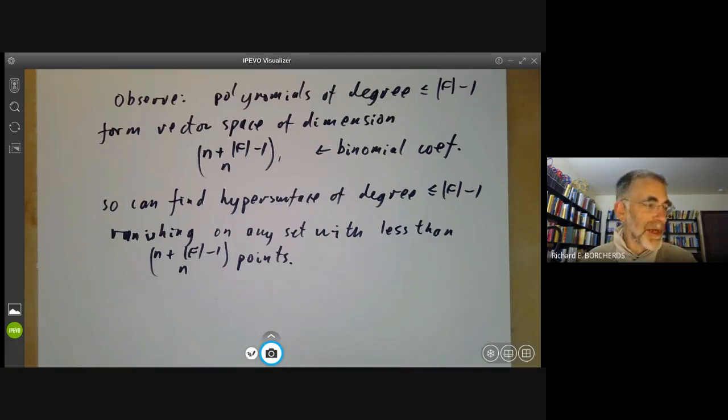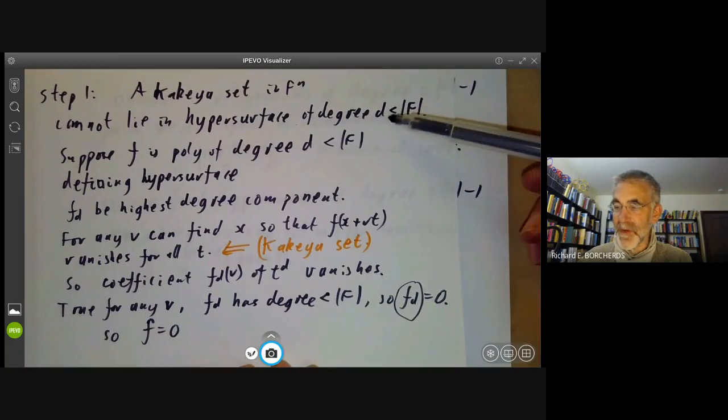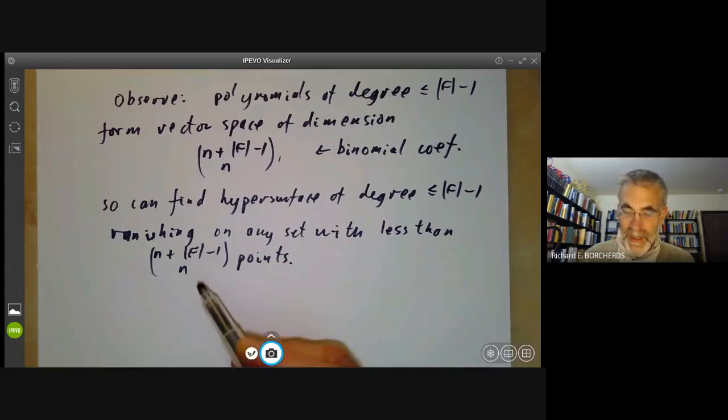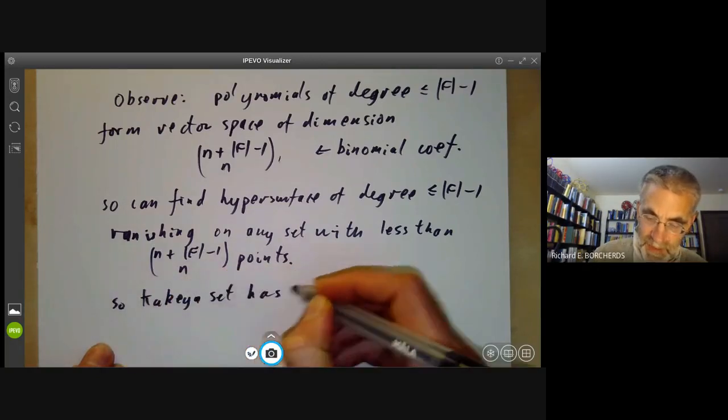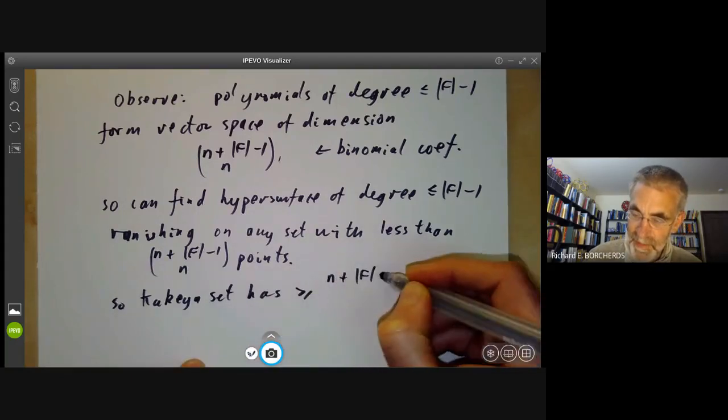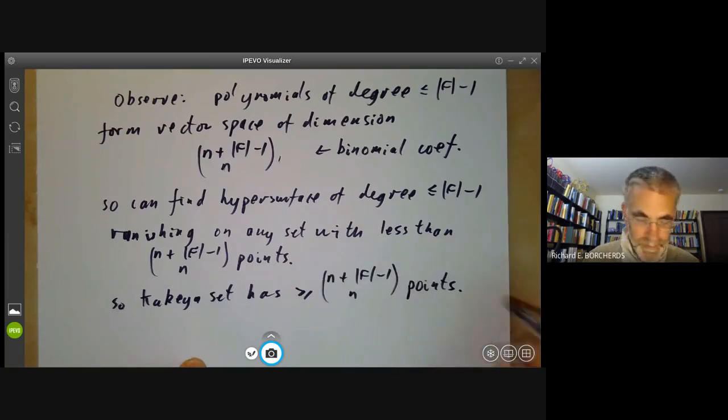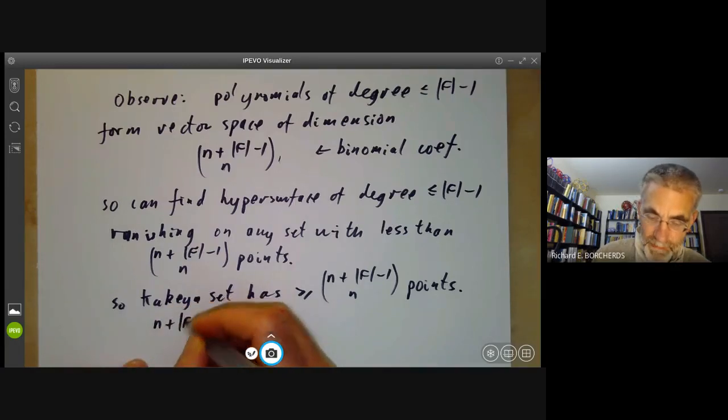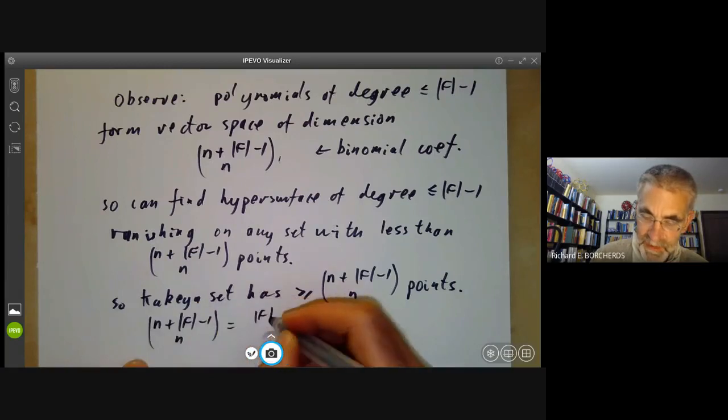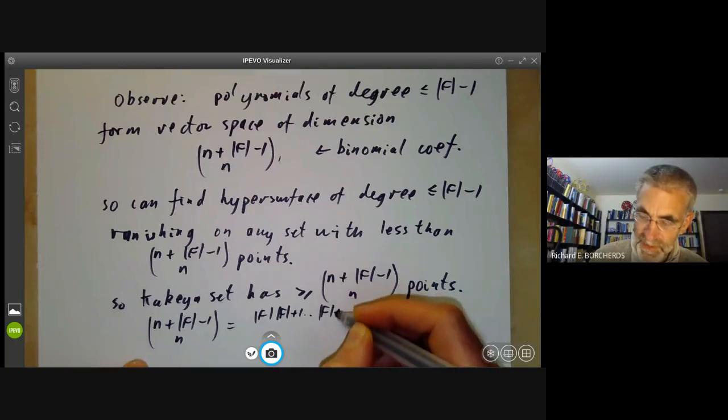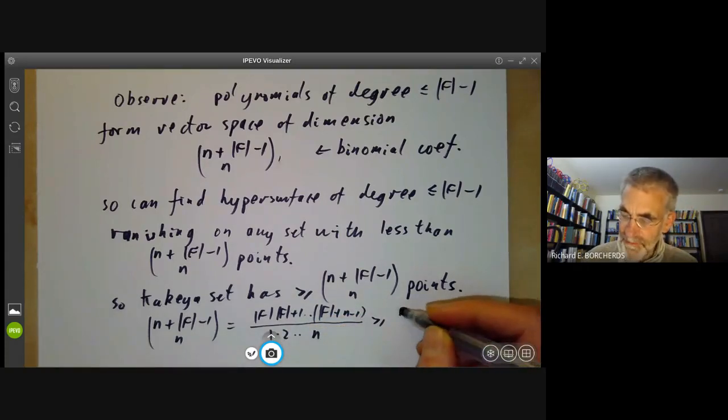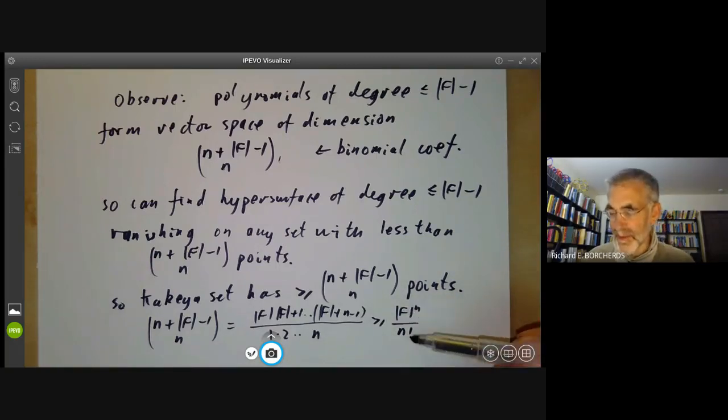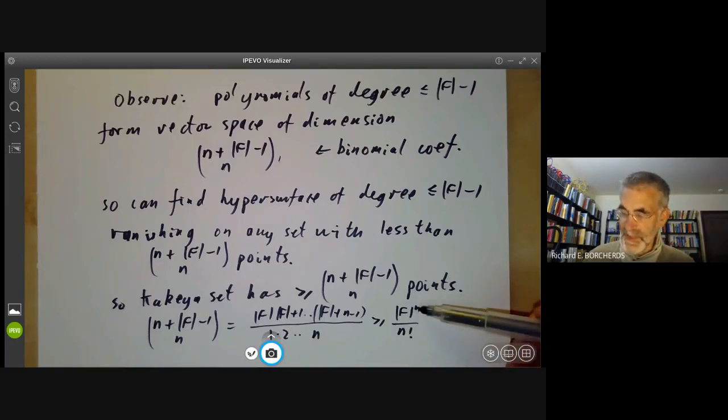So let's put these two together. The Kakiya set cannot lie on a hypersurface of degree less than f, but if it had less than this number of points than it could. So a Kakiya set has at least n plus f minus one choose n points, which is just equal to f times f plus one up to f plus n minus one over one times two up to n, which is greater than or equal to f to the n over n factorial, which is exactly the bound we wanted. So that's the end of the proof. It's a kind of rather remarkable proof of an apparently hard theorem that you can fit on the back of a postcard.